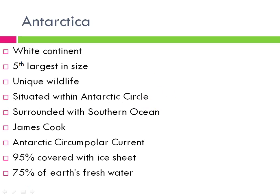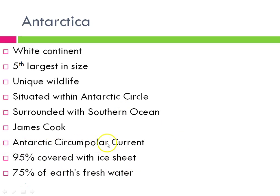Antarctica is situated within the Antarctic Circle and is surrounded by the Southern Ocean. It was James Cook who discovered Antarctica — the credit goes to him. Antarctica is surrounded by an ocean current known as the Antarctic Circumpolar Current. If you don't know what ocean currents are, that will be a topic of future discussion when we talk about tides, waves, and currents. So don't worry about it.